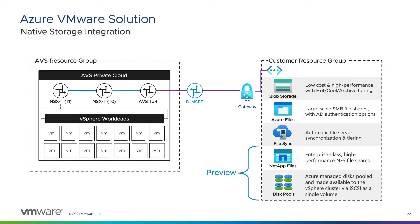VMs deployed in AVS can access native Azure storage services such as storage accounts and blob storage. The connection of workloads to Azure storage services doesn't traverse the internet. The Azure backbone provides high-speed, low-latency, private, and secure connectivity, enabling you to use SLA-based Azure storage services in your private cloud workloads.